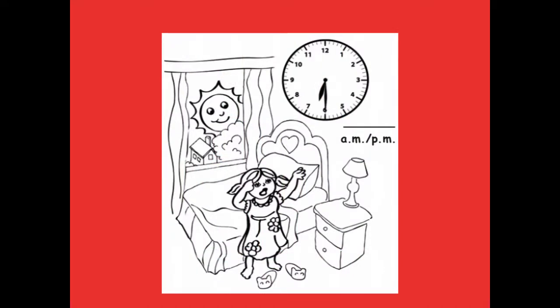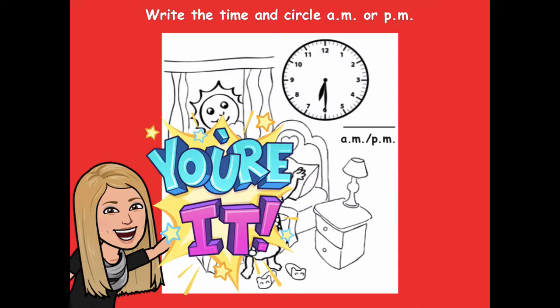Let's look at some examples of things that happen during the day. What's happening in this picture? Look closely — it looks like she could be either getting into bed or getting up from bed. But in the window, it looks like the sun is coming up and he's all happy. So this is probably her getting up in the morning. Pause the video, write the time, and circle AM or PM. Click play when you're ready.